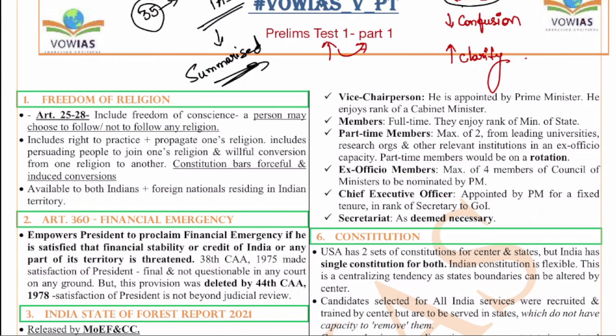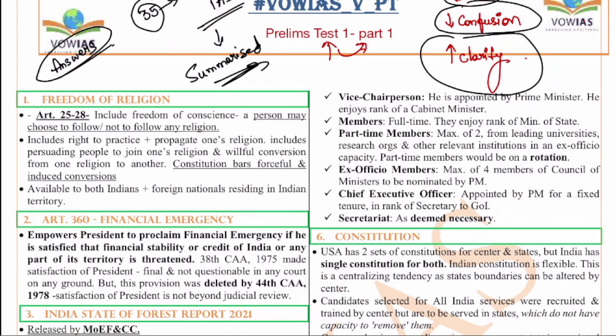The UPSC prelims is becoming more and more complex. The complexity is not there in the questions; the complexity is there in the answers and the statements. To overcome this complexity, the best way is to revise all the things we have studied multiple times. Revision of each and every test and each and every topic multiple times is going to help us in the exam, because you should not get confused - you should be very sharp.